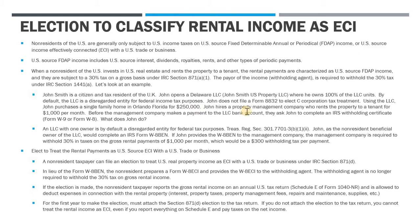After that's done, John hires a property management company who rents the property to a tenant for $1,000 a month. Before the management company can make any payments to John's LLC bank account, they need John to complete a withholding certificate. IRS withholding certificates are either the Form W-9 for U.S. taxpayers or some variation of the Form W-8 — the W-8-BEN, W-8-BEN-E, W-8-IMY, W-8-ECI, and so on.